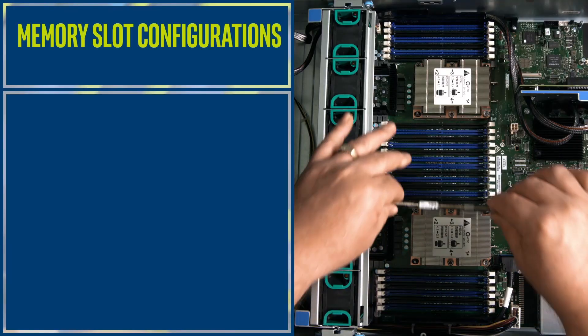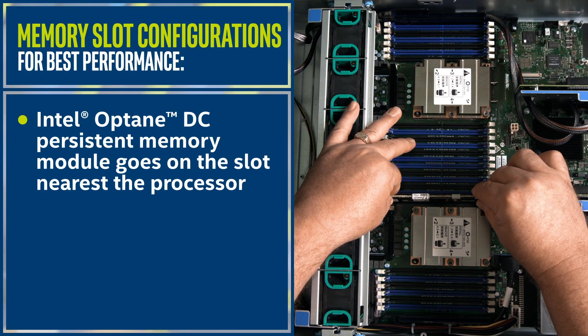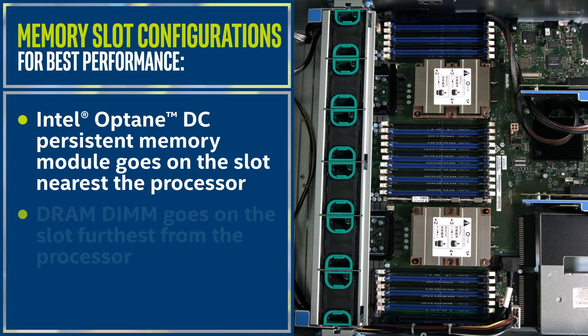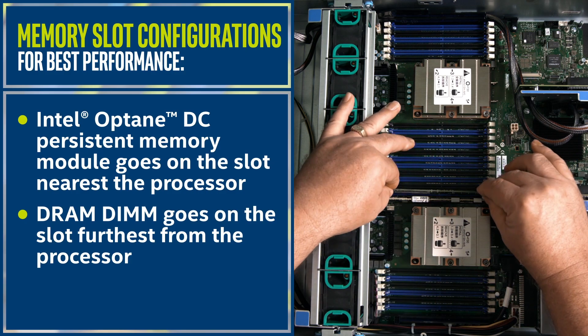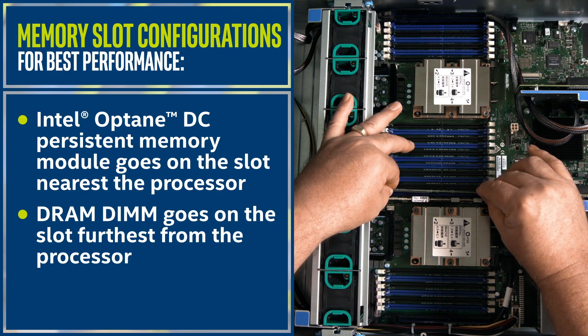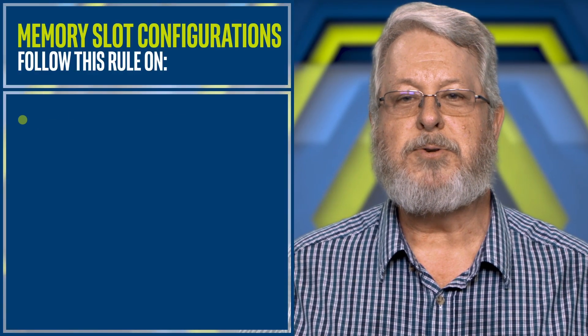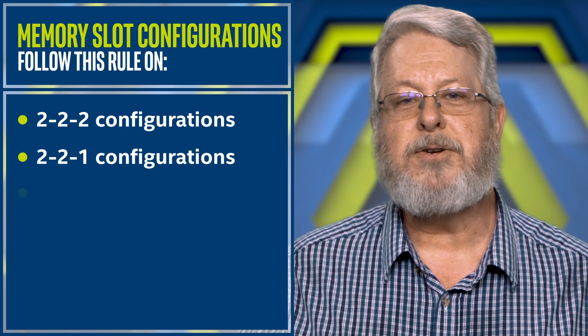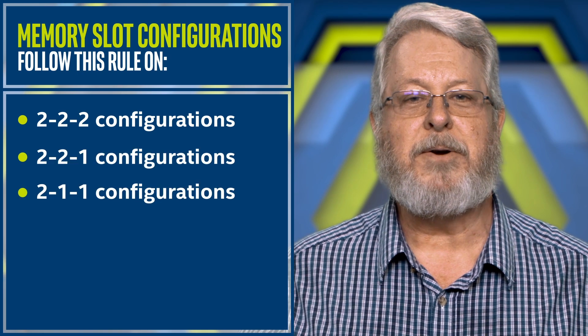To do this, place an Optane Persistent Memory Module on the slot nearest the processor and a DRAM DIMM on the slot furthest from the processor. That means a fast DRAM DIMM is available no matter which memory channel is accessed. Follow this rule on 2-2-2, 2-2-1, and 2-1-1 configurations.